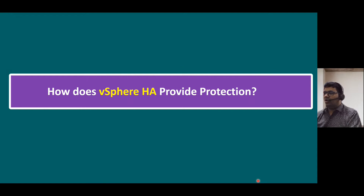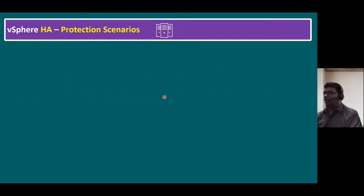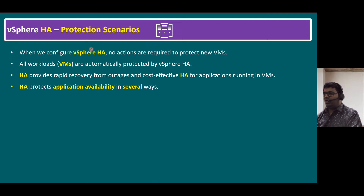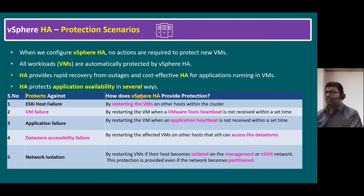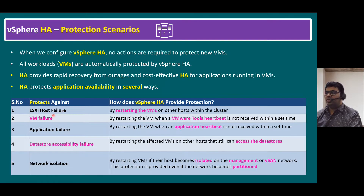Now let's quickly recap all vSphere HA protection mechanisms. The key question: how does vSphere HA provide protection? All five scenarios can be concluded now. vSphere HA protection scenarios: when we configure vSphere HA, no actions are required to protect new VMs — we do not need to do any changes at the VM level. All workloads, meaning virtual machines, are automatically protected by vSphere High Availability. High Availability provides rapid recovery from outages and cost-effective HA for applications running in virtual machines. HA protects application availability at several levels: protection against ESXi host failure, virtual machine failure, application failure, data store accessibility failure, and network isolation — meaning network-separated or network-level failures.